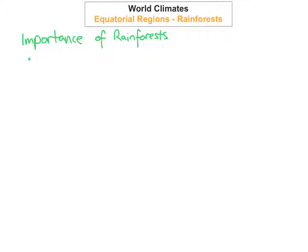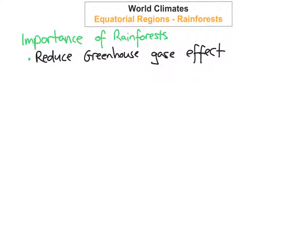The first reason why rainforests are very important is because they help to reduce the greenhouse gas effect. They absorb lots of carbon dioxide (CO2), and this results in less CO2 getting into our atmosphere and causing our ozone layer to be worn away.